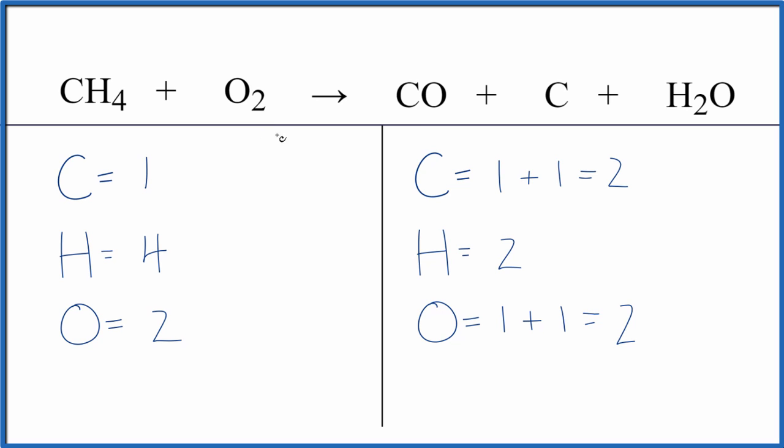I've already counted the atoms up. The thing to be careful about, we have a carbon here and a carbon here, one plus one. That gives us two carbon atoms. And then we have an oxygen here and here, one plus one again, two oxygen atoms. So make sure you counted those up correctly.